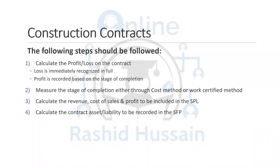Within IFRS 15, there is another standard which was merged earlier — the construction contract. Within IFRS 15, there are two standards. The first one was IAS 18, which used to be the revenue recognition standard, and IAS 11, the construction contracts. These two standards were merged, and the new standard is known as IFRS 15.